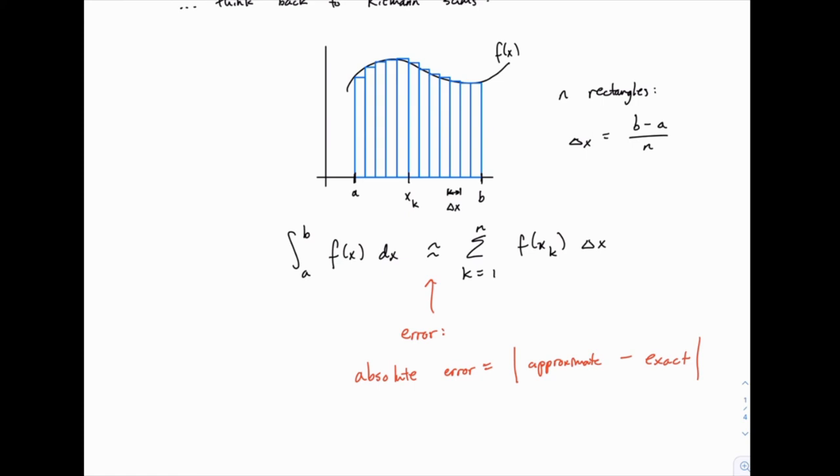So it's often more important to talk about the relative error, because this scales it based on the size of the correct answer. So in the first case, where we got an answer of 2 instead of 1, we were off by 100% from the correct answer, versus in the second example, when we got 101 for a correct answer of 100, we were only off by 1%. So to scale it, we'll just take the absolute error and divide that by the exact value. And we'll use the absolute value here again.